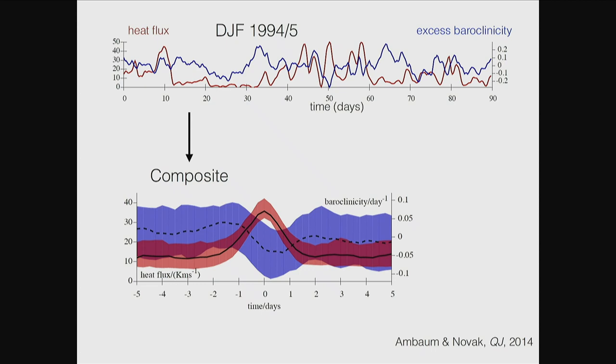Here is an example. In the red line you find how this eddy activity - this heat flux - varies over time. It's sometimes areas where there's not much storm activity happening, and then you have peaks of storm activity in winter. In blue is the growth rate that goes along with it. You can select times when the heat flux was large, call that time zero, and composite around that. You can see that heat flux comes in peaks. But if you composite around the same times, the eddy growth rate - the baroclinicity - you find a totally different picture. In fact, when there's a peak in heat flux, the eddy growth rate goes down.